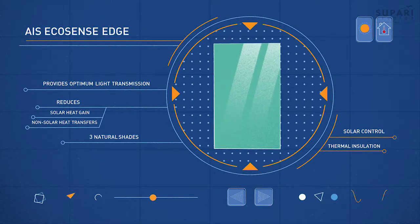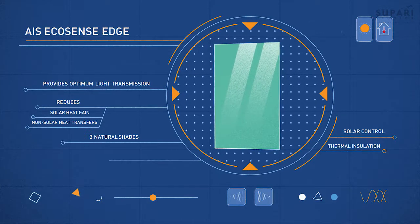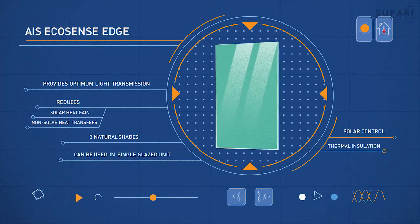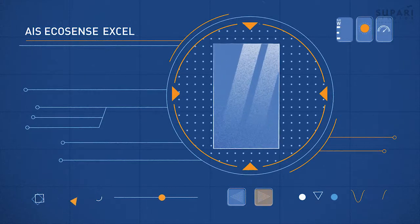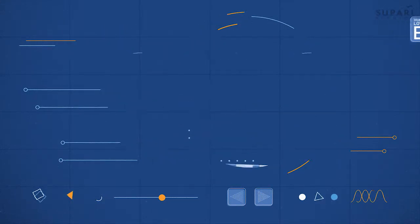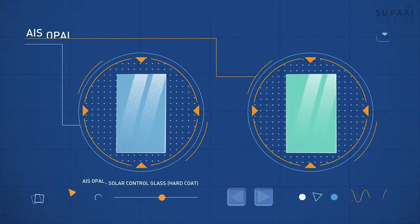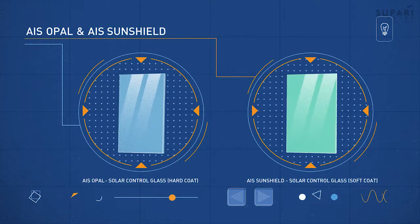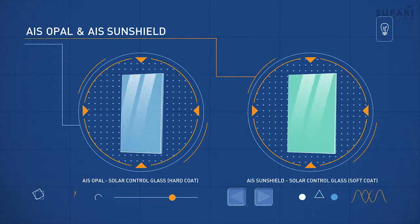EcoSense Edge for solar control and thermal insulation in a single glazed unit, EcoSense XL, a double low-E high performance glass. We also offer AIS Opal and AIS Sunsheat glass range under energy efficiency solutions.